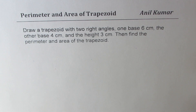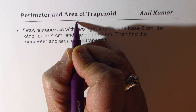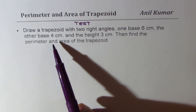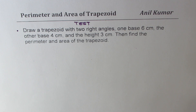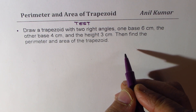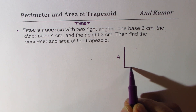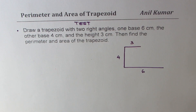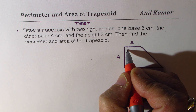Here is the last question, which can be treated as a test question. Pause the video and copy this question. Draw a trapezoid with two right angles, one base 6 centimeters, the other base 3 centimeters, and height 4 centimeters. Then find the perimeter and area of the trapezoid. To solve this, we first construct it: a height of 4, a base of 6, and a top of 3 units. We join the corners to make a trapezoid with two right angles.